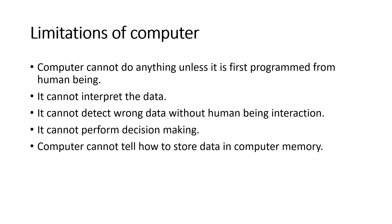Limitations — a computer cannot do anything unless it is first programmed by a human being. It cannot interpret data on its own. It cannot detect wrong data without human interaction. It cannot perform decision making, and it cannot determine how to store data in a computer system.